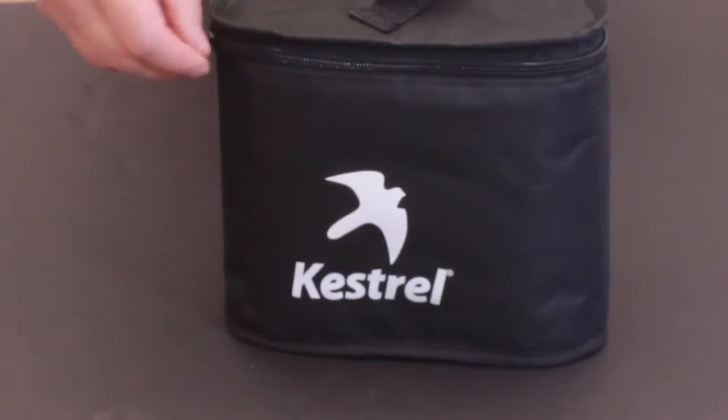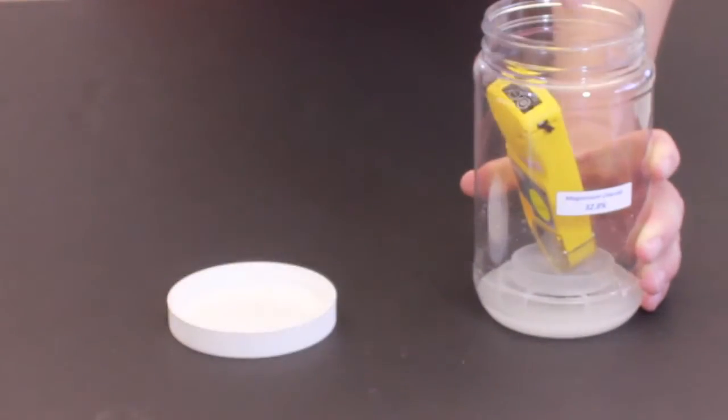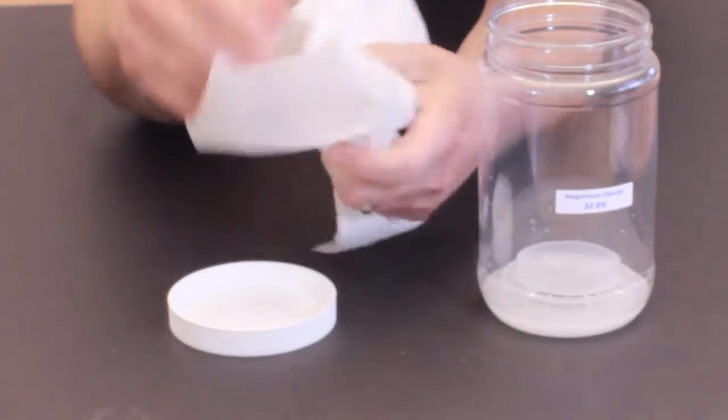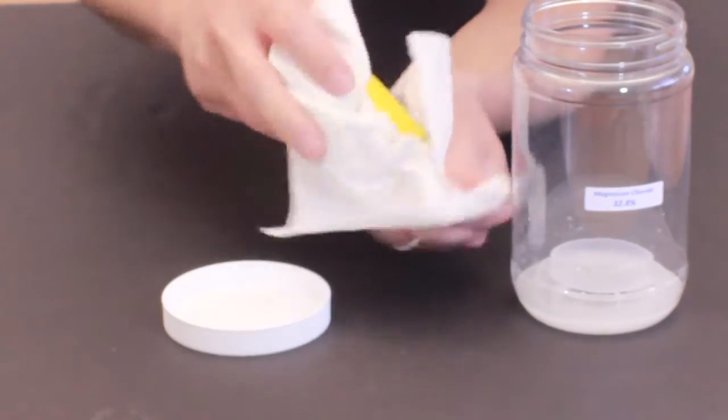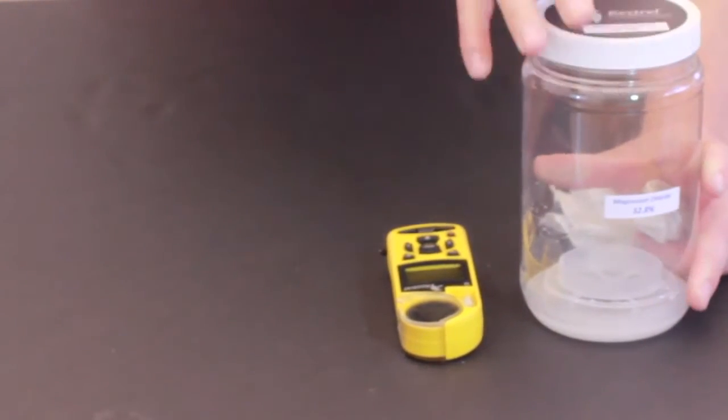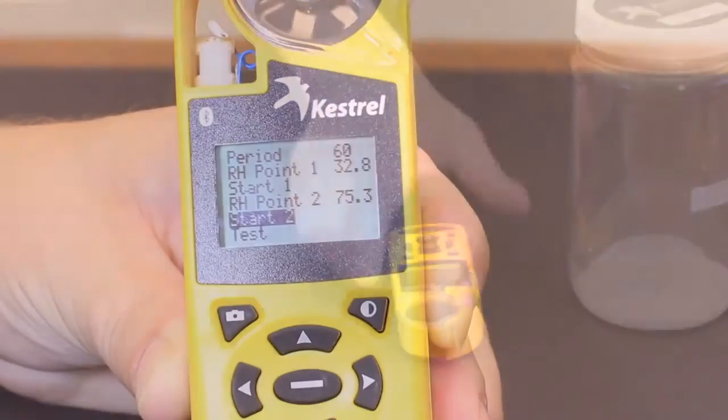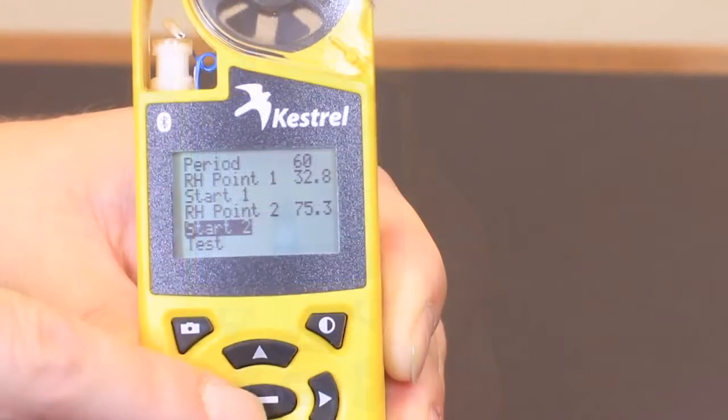So an hour has passed. We'll open up our calibration kit, pull out the magnesium chloride chamber, open it up, and we're going to make sure we wipe off any excess salts, including the lanyard, because we do not want these salts to mix with the next container. Once we're done wiping that off, we'll close up the container, and we'll pull out the sodium chloride container. We just pulled the 4500 from the first calibration chamber, and now we're ready to proceed for the second calibration. We'll go to start two. We'll hit the center button.